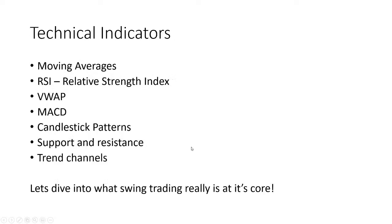Let's go over a couple of basic technical indicators. We're going to look at moving averages — probably one of our favorites, and everybody's looking at moving averages. What is a moving average? What is RSI — Relative Strength Index? What is VWAP? What is MACD, which ties in with moving averages? Then we've got candlestick patterns, support and resistance lines, and trend channels. These are all things that are going to help us identify the best swing trades out there.